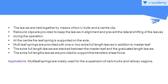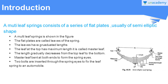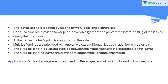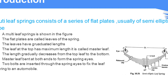The leaves are held together by means of two U-bolts and a center clip, as seen in the figure. These leaves of this multi-leaf spring are held together by U-bolts. Rebound clips are provided to keep the leaves in alignment and prevent lateral shifting of the leaves during operation. These rebound clips are used to keep the leaves of the multi-leaf spring without any disturbance.